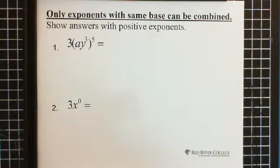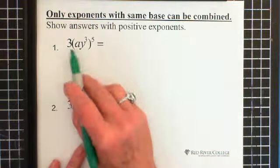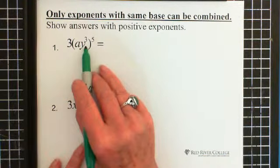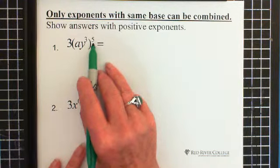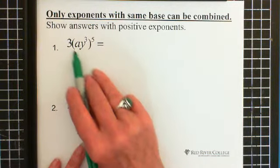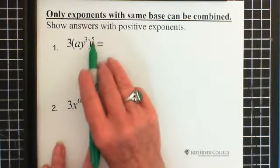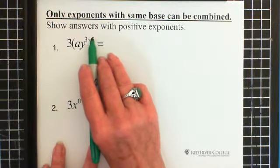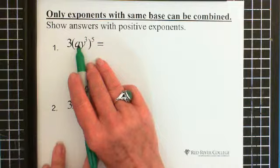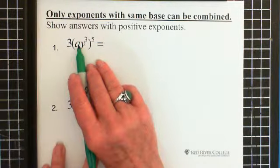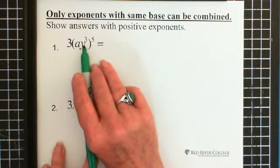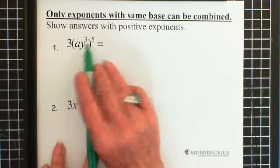So here we have 3 times ay cubed and that is raised to the power of 5. And it's just the piece in the brackets that's raised to the power of 5. So what this power of 5 does is it's attached to both the a and to the y. So it looks like this.